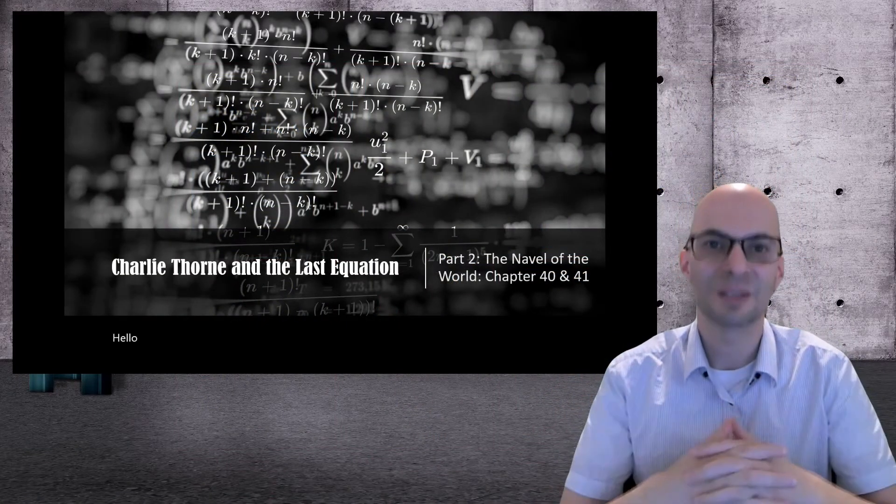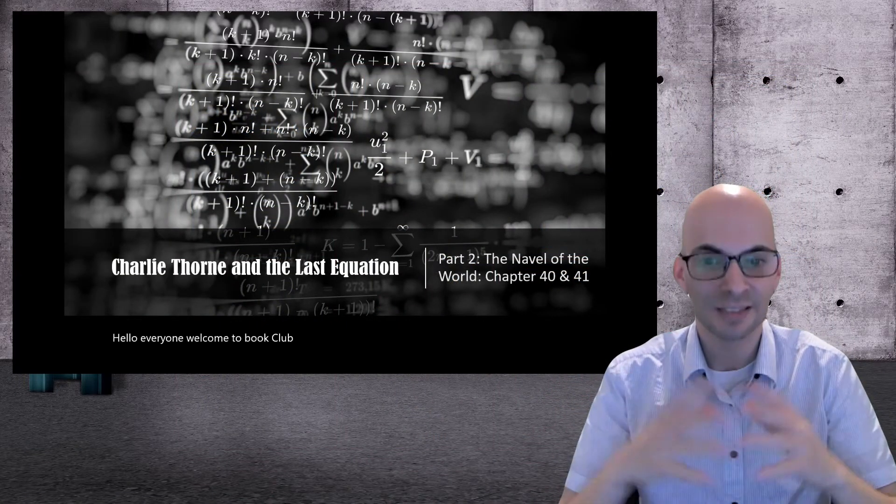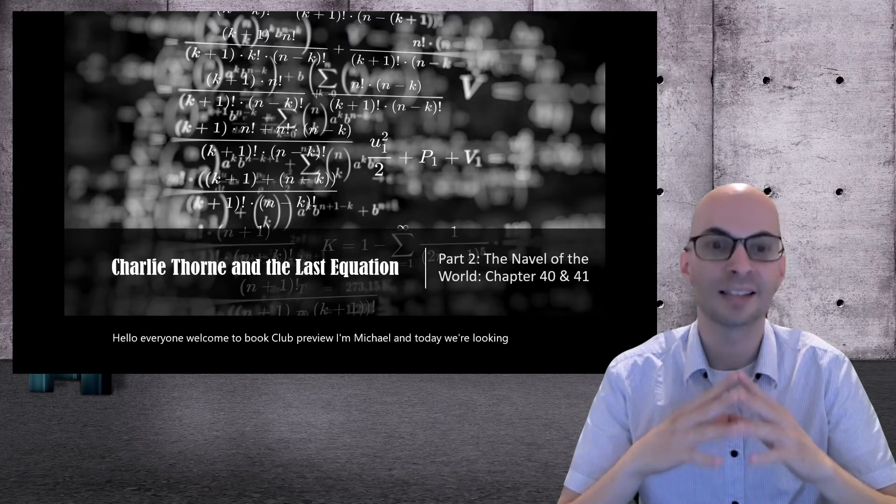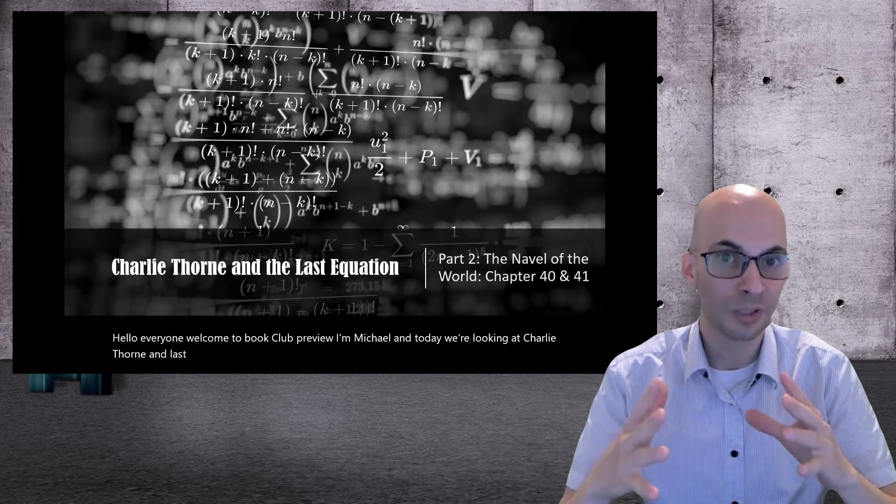Hello everyone, welcome to Book Club Preview. I'm Michael, and today we're looking at Charlie Thorne and the Last Equation, Chapter 40 and 41.